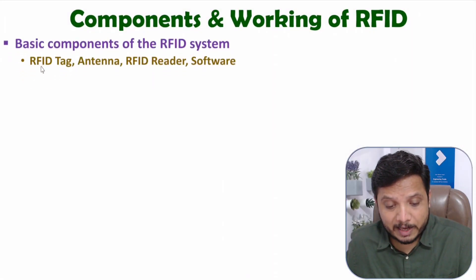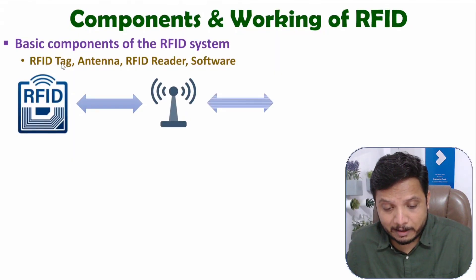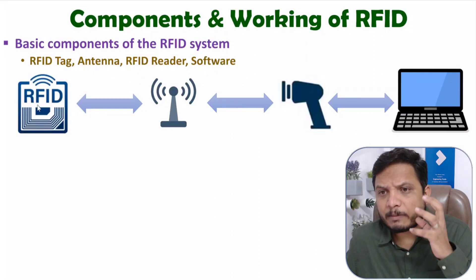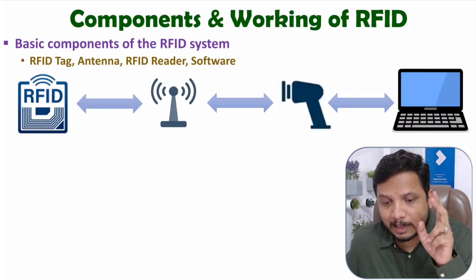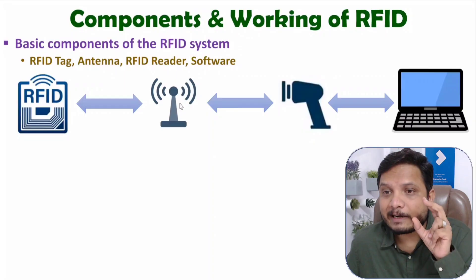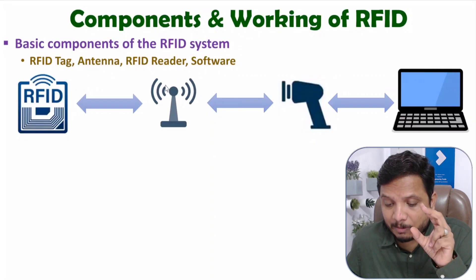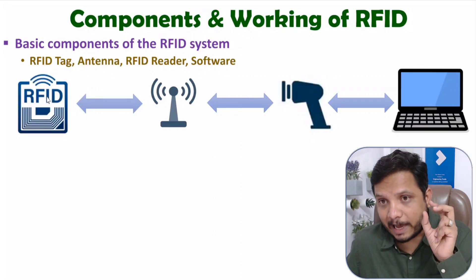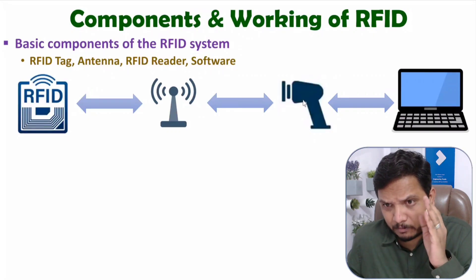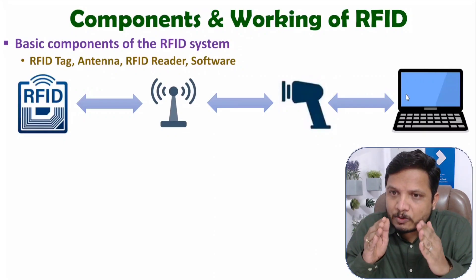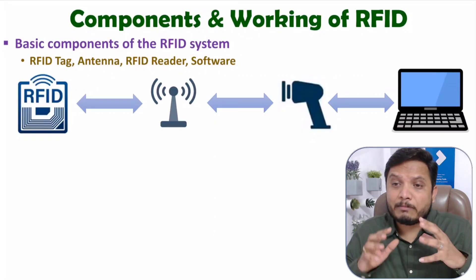In an RFID system, we generally have four components: RFID tag, antenna, RFID reader, and software. The RFID tag has a microchip inside plus it will have an antenna. With the use of the antenna, the RFID tag can communicate with the RFID reader. The RFID reader can also have an antenna integrated within it. If you need long-range communication, an external antenna can also be connected with the RFID reader. The RFID reader will be scanning objects using the RFID tag and translating that information to a centralized system.